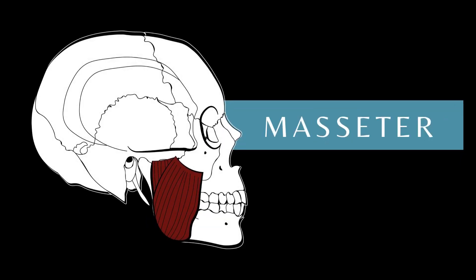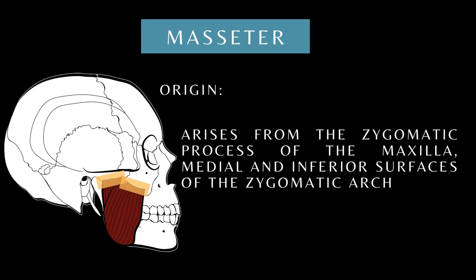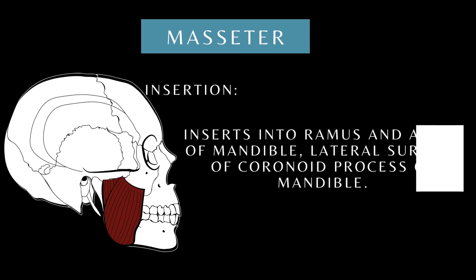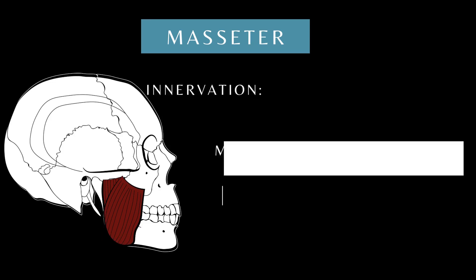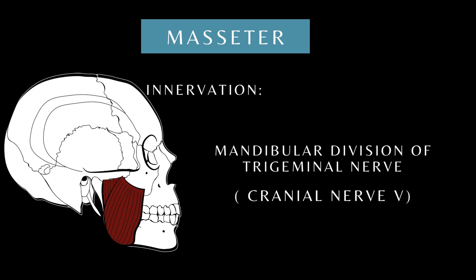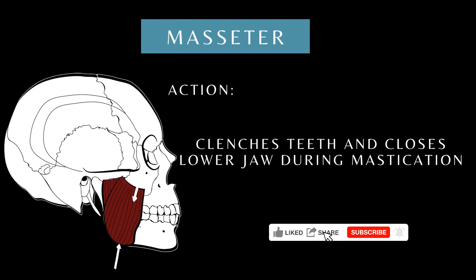The masseter arises from the zygomatic process of the maxilla, and the medial and inferior surfaces of the zygomatic arch. It inserts into the ramus and angle of the mandible and the lateral surface of the coronoid process of the mandible. It is innervated by the mandibular division of the trigeminal nerve. The masseter clenches the teeth and closes the lower jaw during mastication.